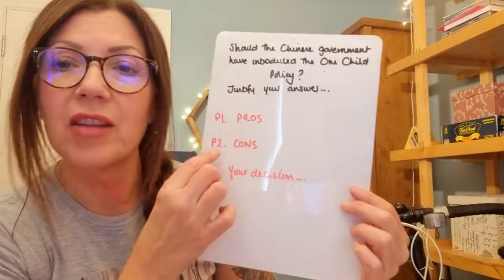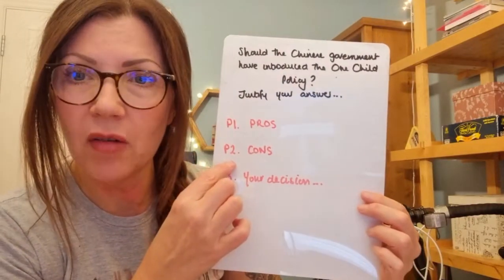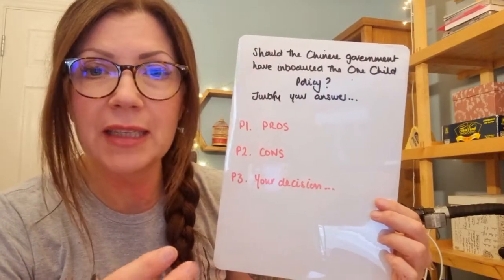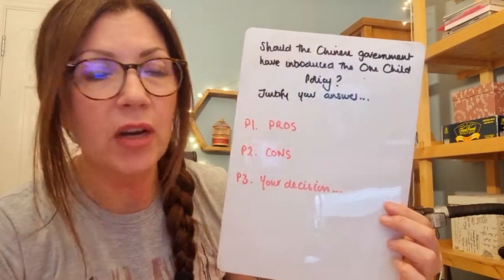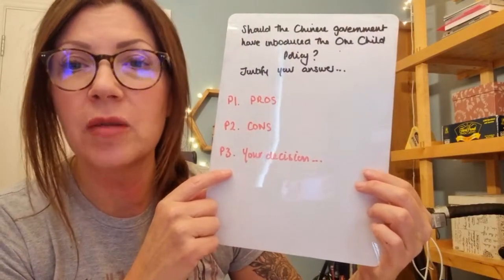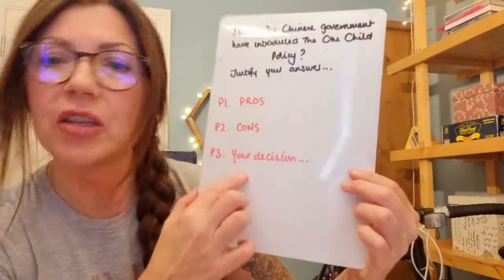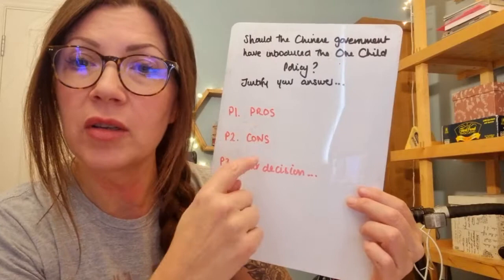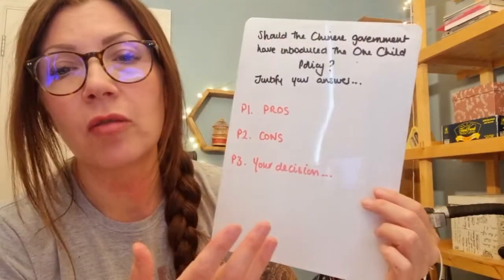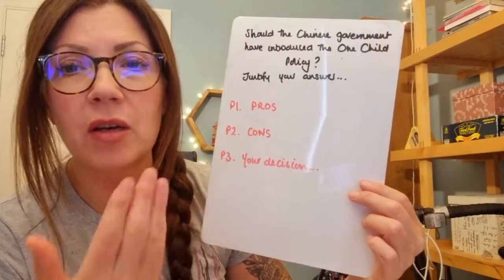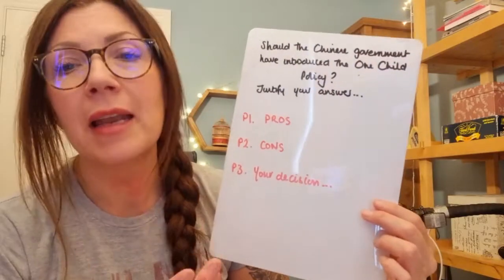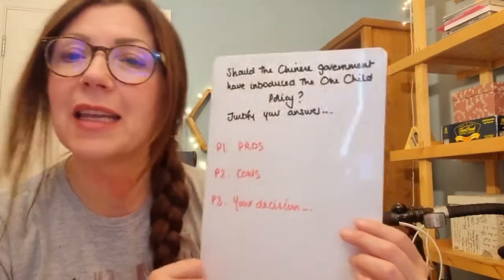The next paragraph will cover the cons — the negatives of the policy — and again these can be developed using our connectives. The final paragraph is where we decide whether the policy should have been introduced or not. We make a decision based on either the pros or the cons — whichever we think was the best overall. As long as we back that up, we will be justified in our answer. That is the key term: justification.